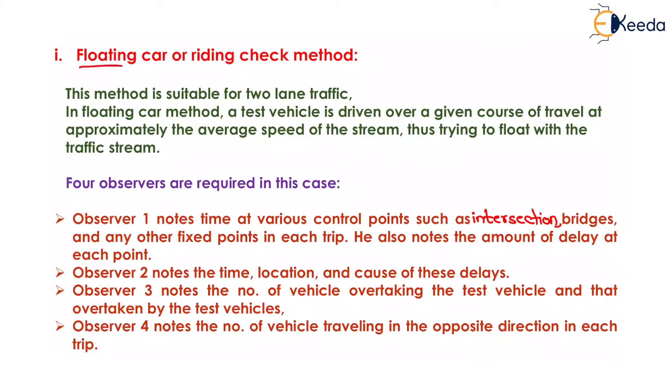We will start with the floating car or riding check method. This method is suitable for two-lane traffic. In floating car method, a test vehicle is driven over a given course of travel at approximately the average speed of the stream, thus trying to float with the traffic stream.